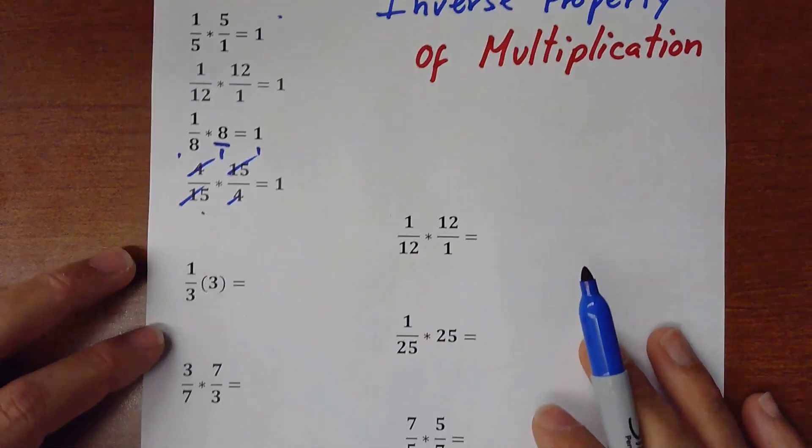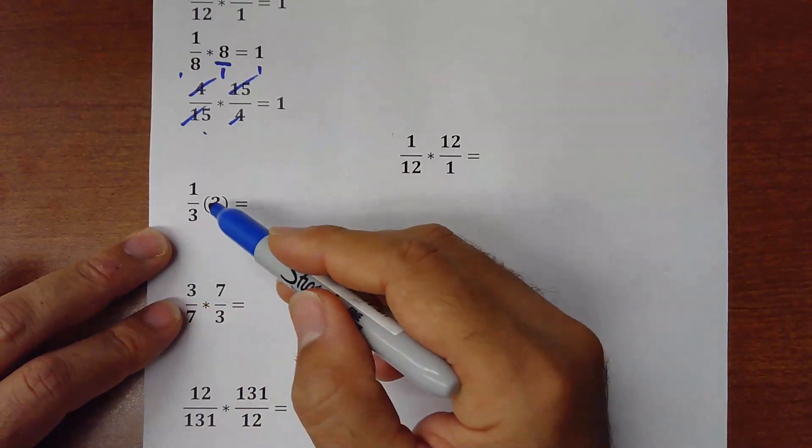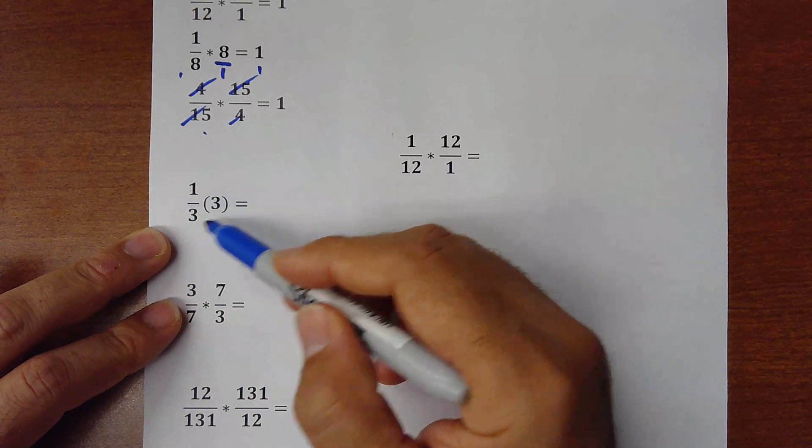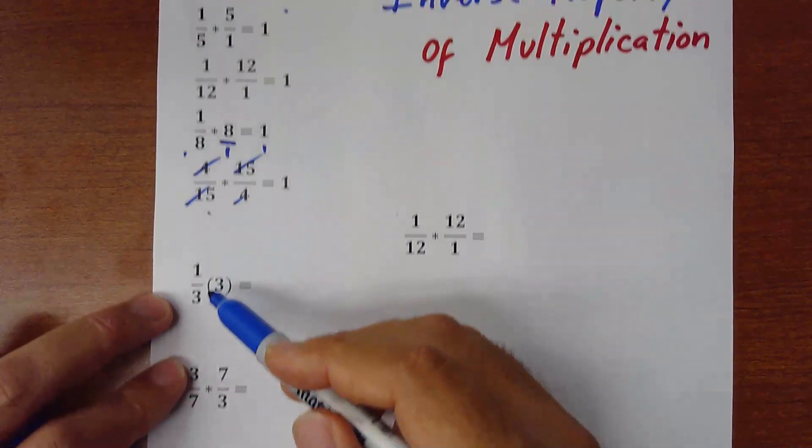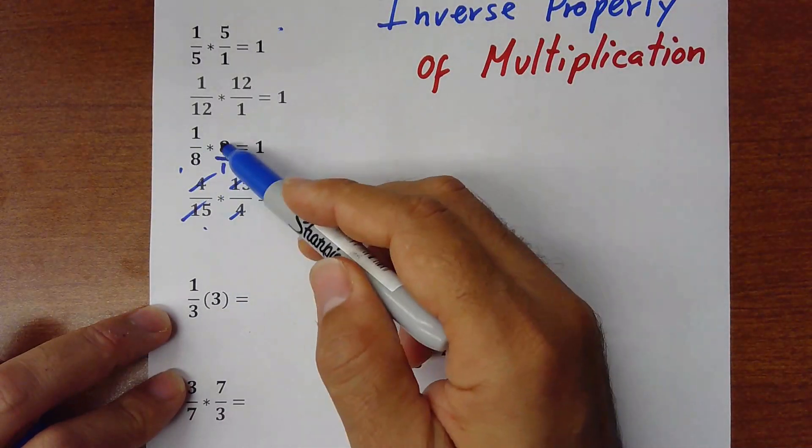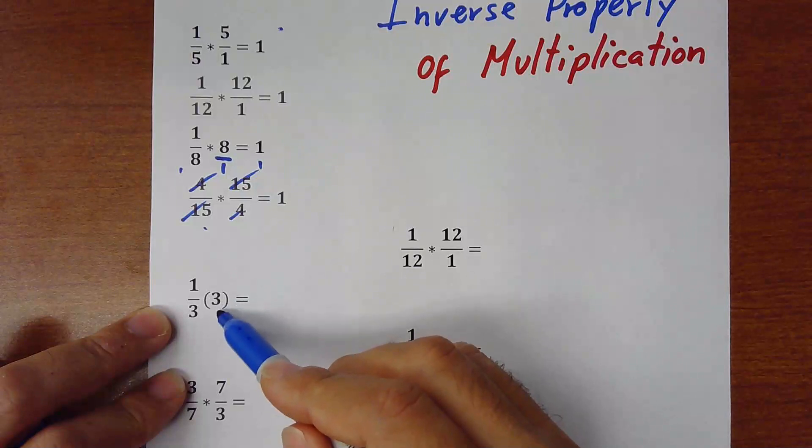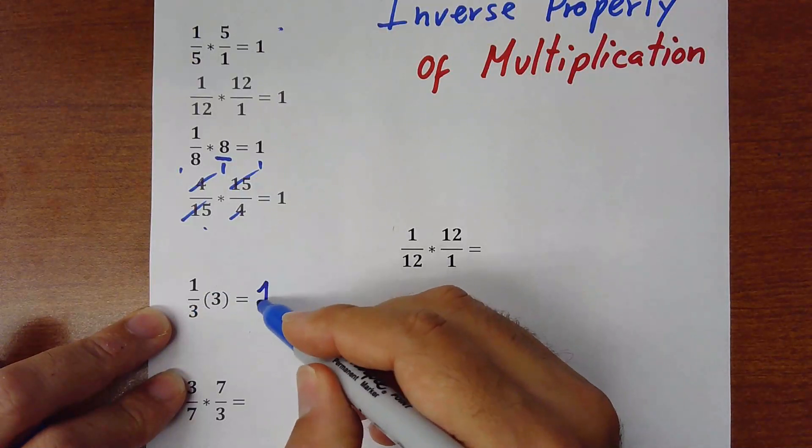Okay, so here's some exercises to complete. For example this one. Also parenthesis means multiplication. So this is the same example as 1 over 8 times 8. So this is like 3 over 1. It's the inverse. We are multiplying. So the answer would be 1.